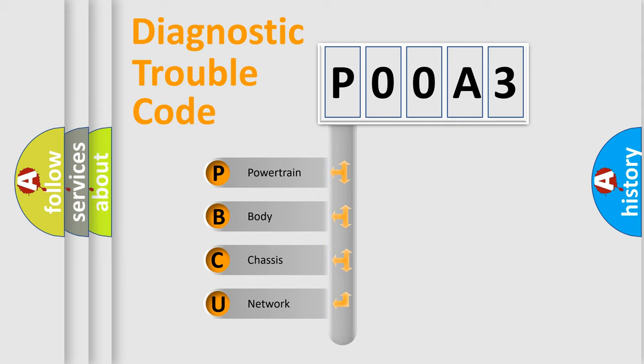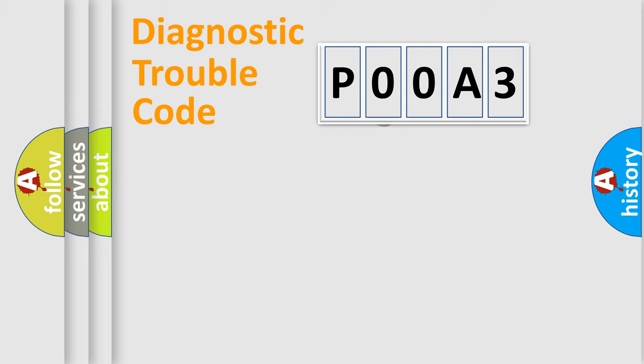We divide the electric system of automobile into four basic units: Powertrain, Body, Chassis, and Network. This distribution is defined in the first character code.